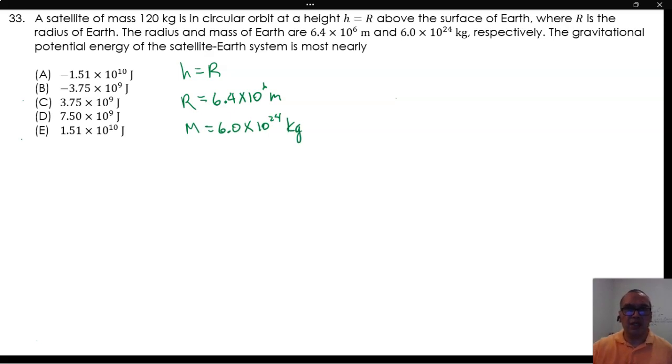The gravitational potential energy of the satellite-Earth system is most nearly. Remember that we will calculate the change in potential energy as the negative of the integral from the initial position to the final position of the gravitational force.